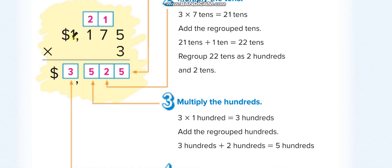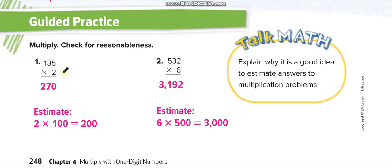Now 3 times 1 = 3 plus 2 = 5, 5 here. 3 times 1 = 3, and the dollar sign, so the product is $3,525. Similarly, guys, you will solve these questions and match your answers from this video. No need of estimation.